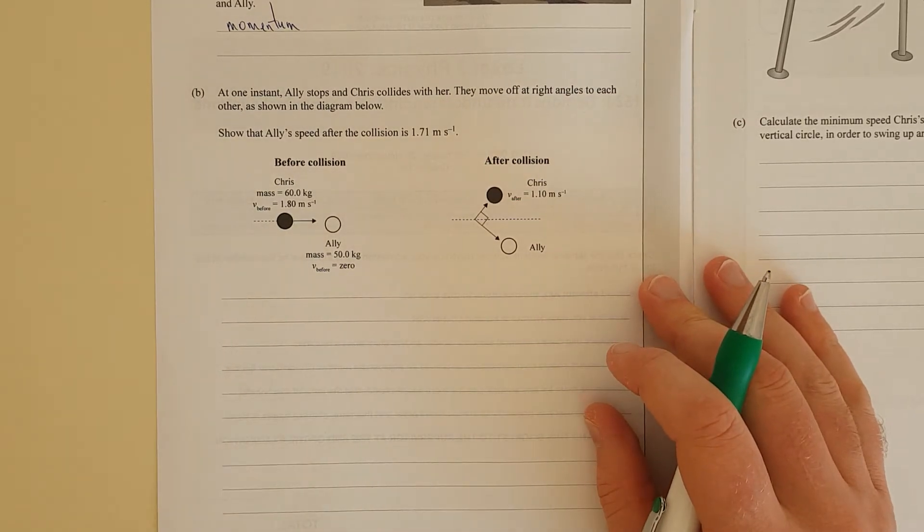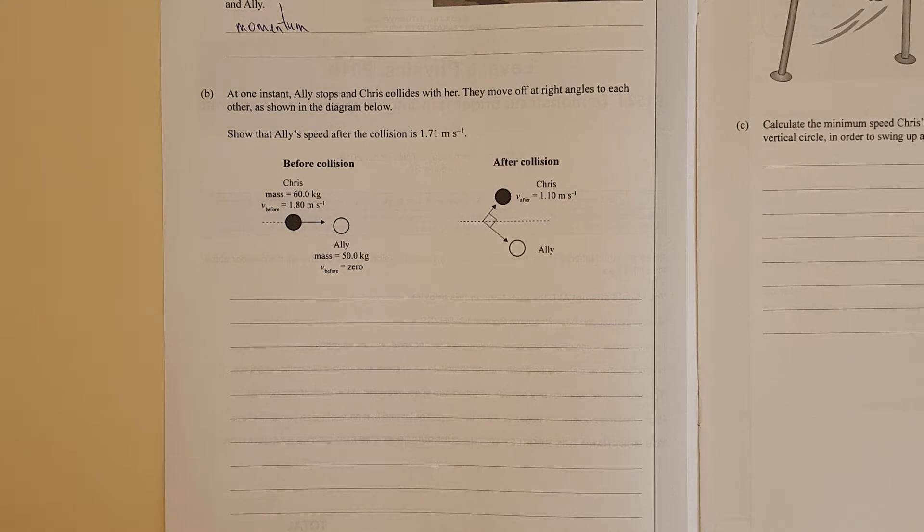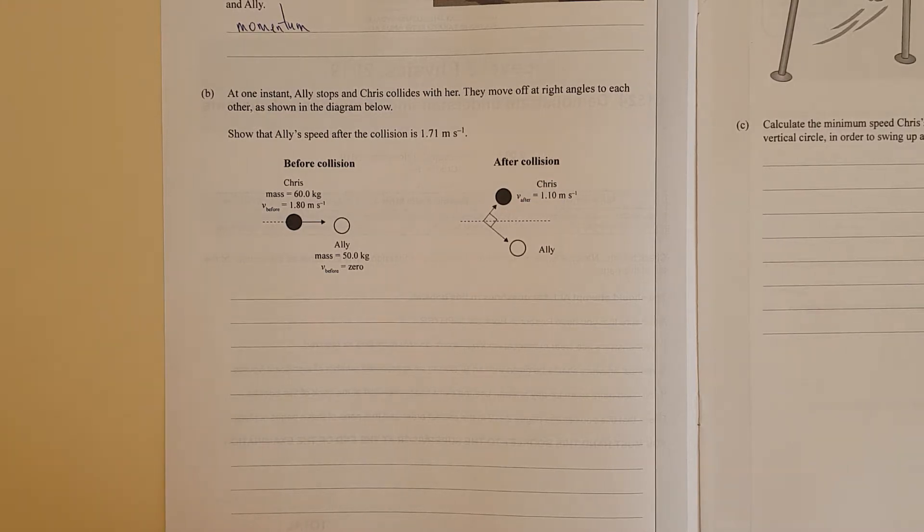At one instant Ali stops, Chris collides with her, and they move off at right angles to each other as shown in the diagram below. Show that Ali's speed after the collision is 1.71 meters per second.